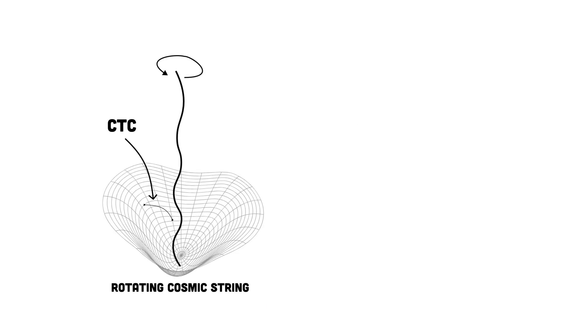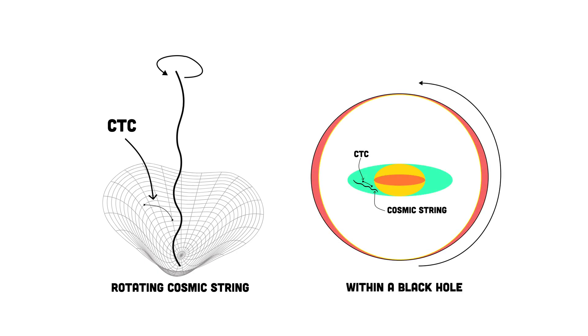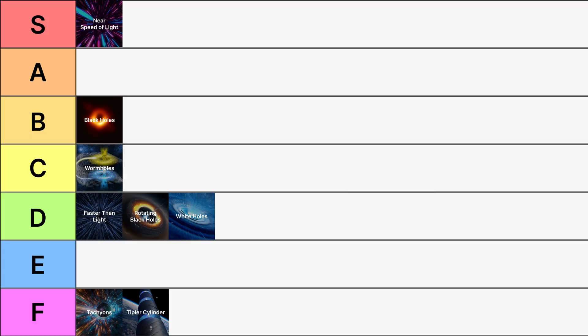Alternatively, a single cosmic string rotating rapidly or within the event horizon of a black hole might also create a closed time-like curve. While we haven't observed any cosmic strings yet, they remain a theoretical possibility with intriguing implications for the nature of spacetime and time travel. I'm placing cosmic strings in D-tier for time travel feasibility.